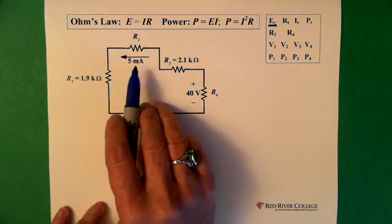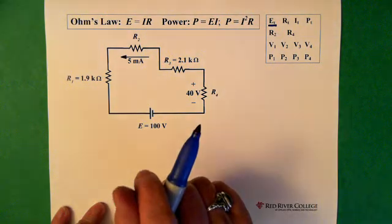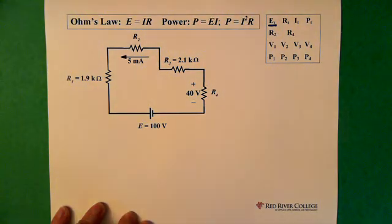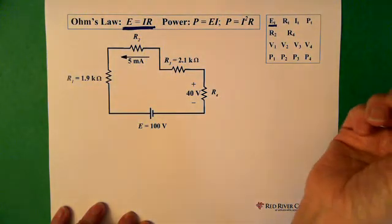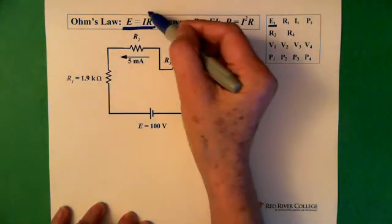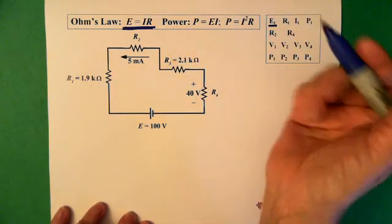Now the thing about questions like this is that you have to figure out where you have two pieces of information. And with those two pieces of information solve something else. We're using Ohm's law, E equals IR. And so you can see that if you have two pieces of information you can solve the other one.